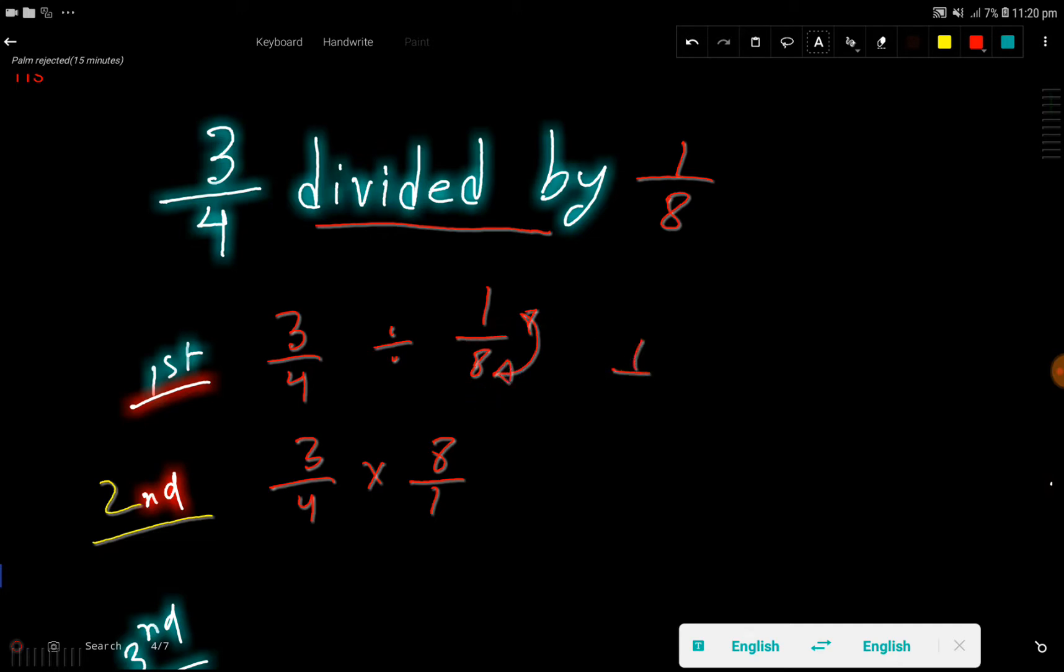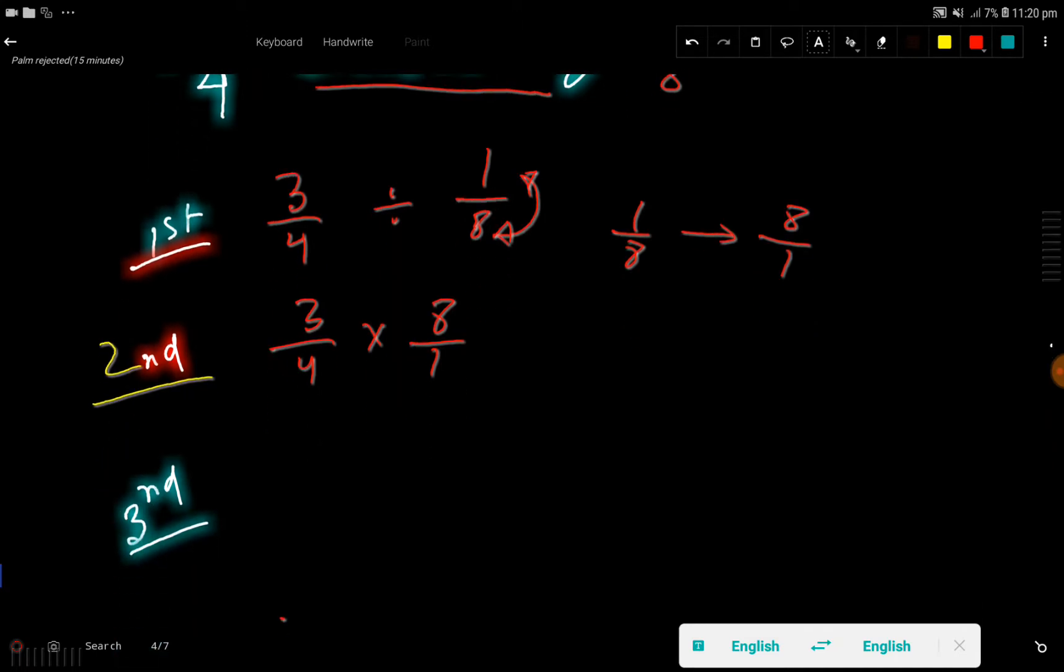So in the third step, you just need to multiply top to top and bottom to bottom. Top to top means 3 times 8, and 4 times 1. So we are getting 24 divided by 4.